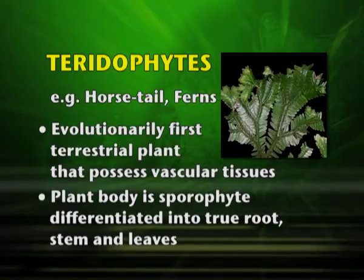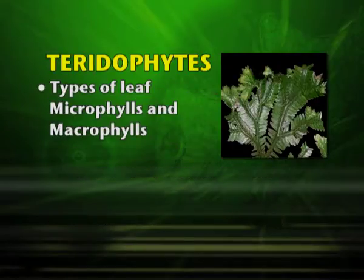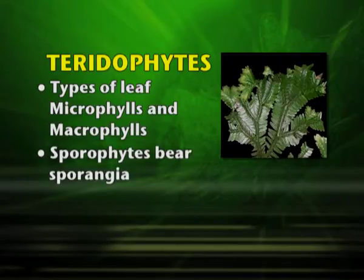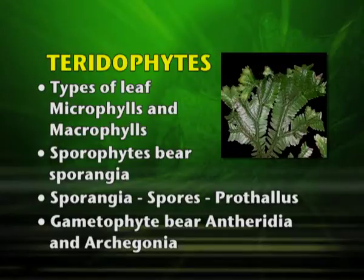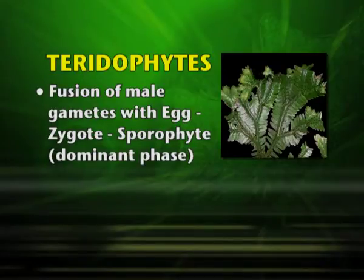The plant body is a sporophyte and is differentiated into true root, stem and leaves. They have two types of leaves: microphylls, which are small leaves, and macrophylls, which are larger leaves. The sporophyte bears sporangia, which produces spores that form the prothallus. The gametophyte bears antheridia and archegonia. The fusion of the male gamete with the egg results in the formation of a zygote, which then develops into the sporophyte — the dominant phase in pteridophytes.